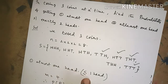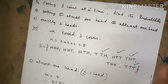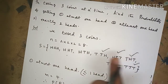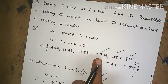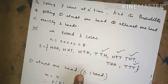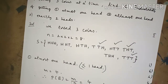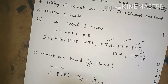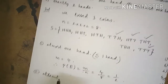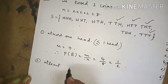At most 1 head means less than or equal to 1 head. There are three outcomes with exactly 1 head and one outcome with 0 heads (TTT), so less than or equal to 1 head gives m equal to 4.